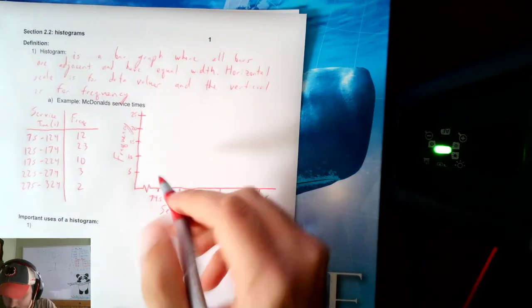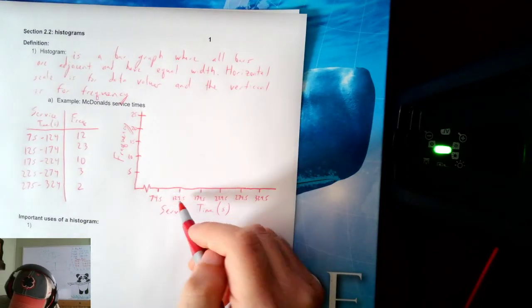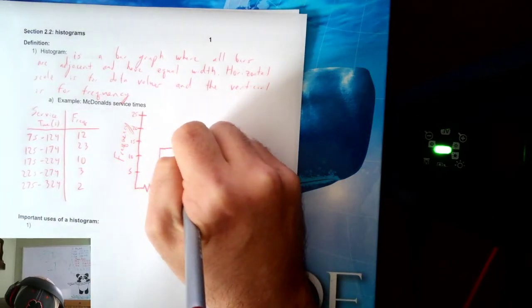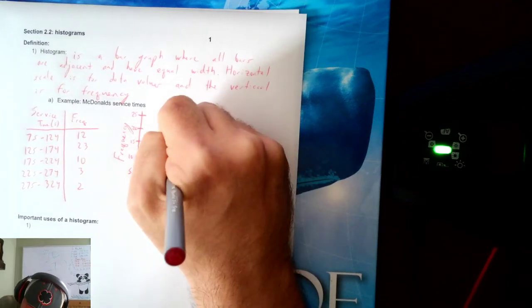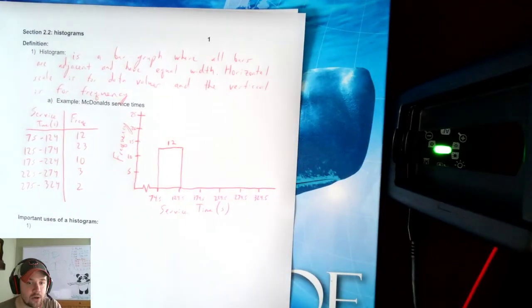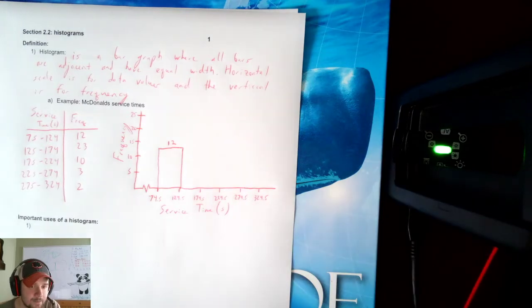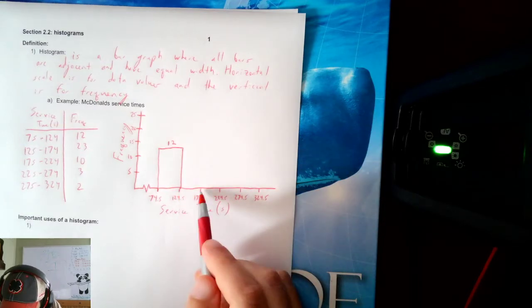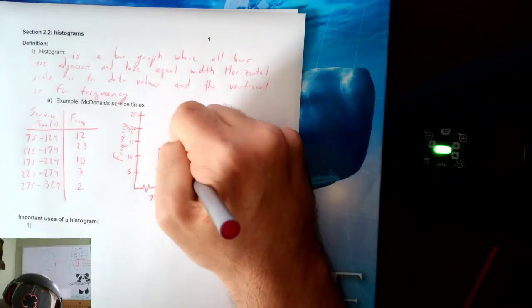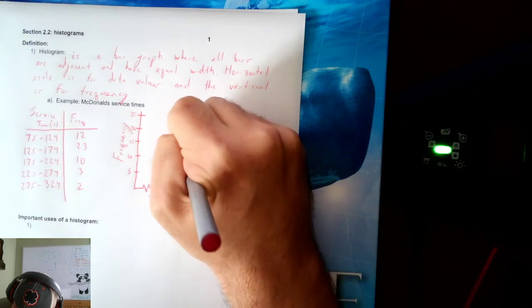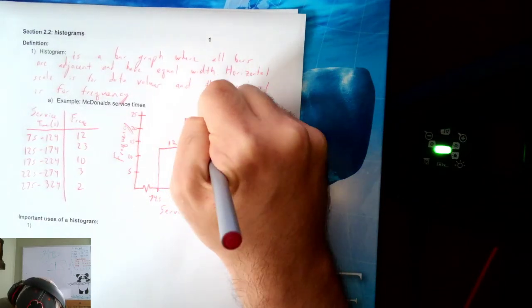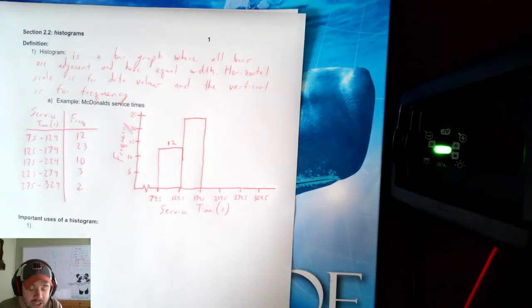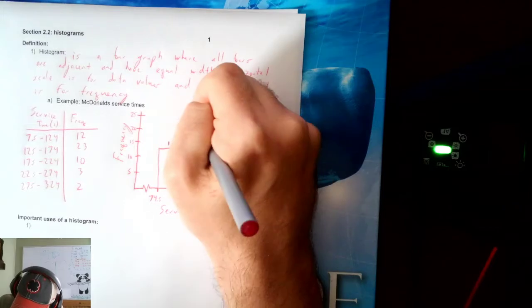Now, how tall do I make each bar? Well, between 74.5 and 125, I have a frequency of 12. So I'll draw a vertical bar up to 12. And I like to put a little 12 on top, so I know that it went up to 12. And that's my first bar. My second bar needs to touch this bar, and it's between these two values. It's 23. So it's going to be connected to this and go up to 23.